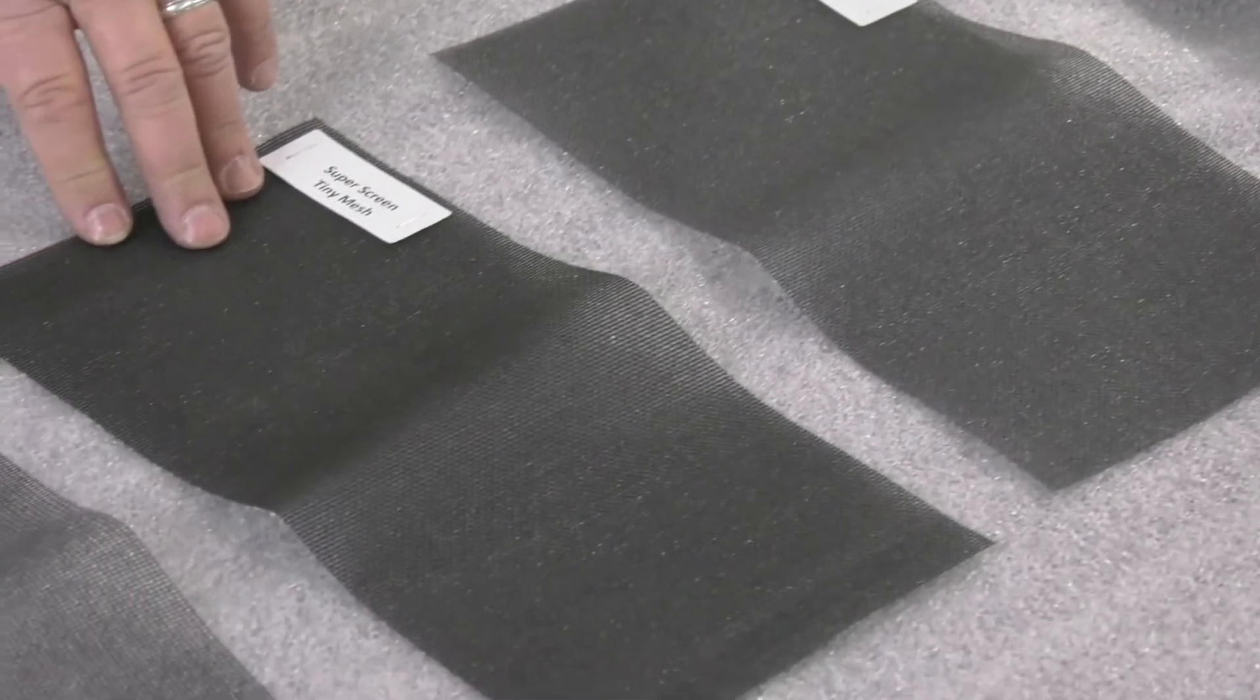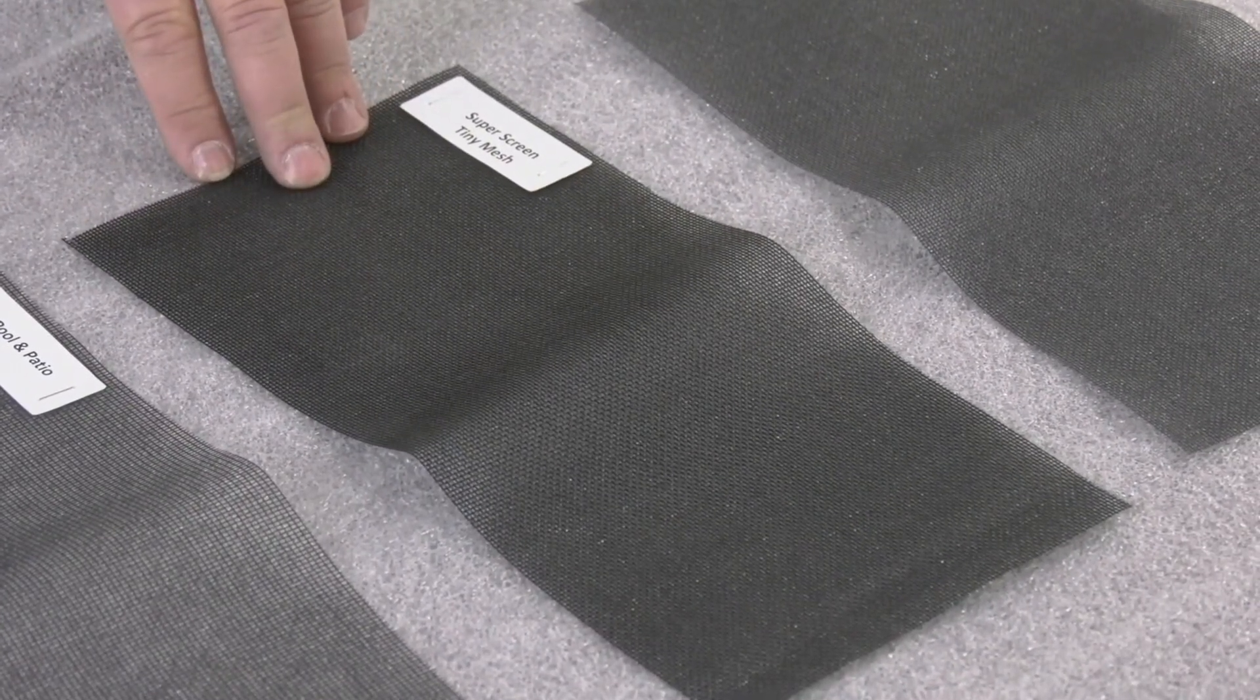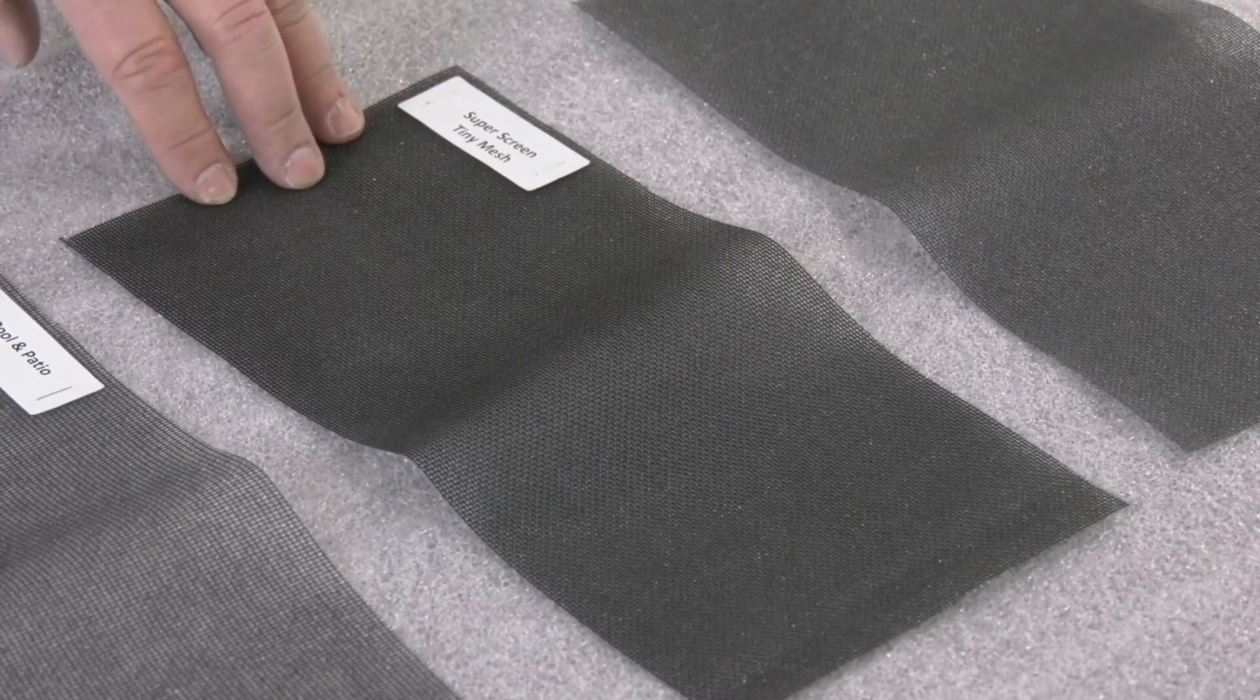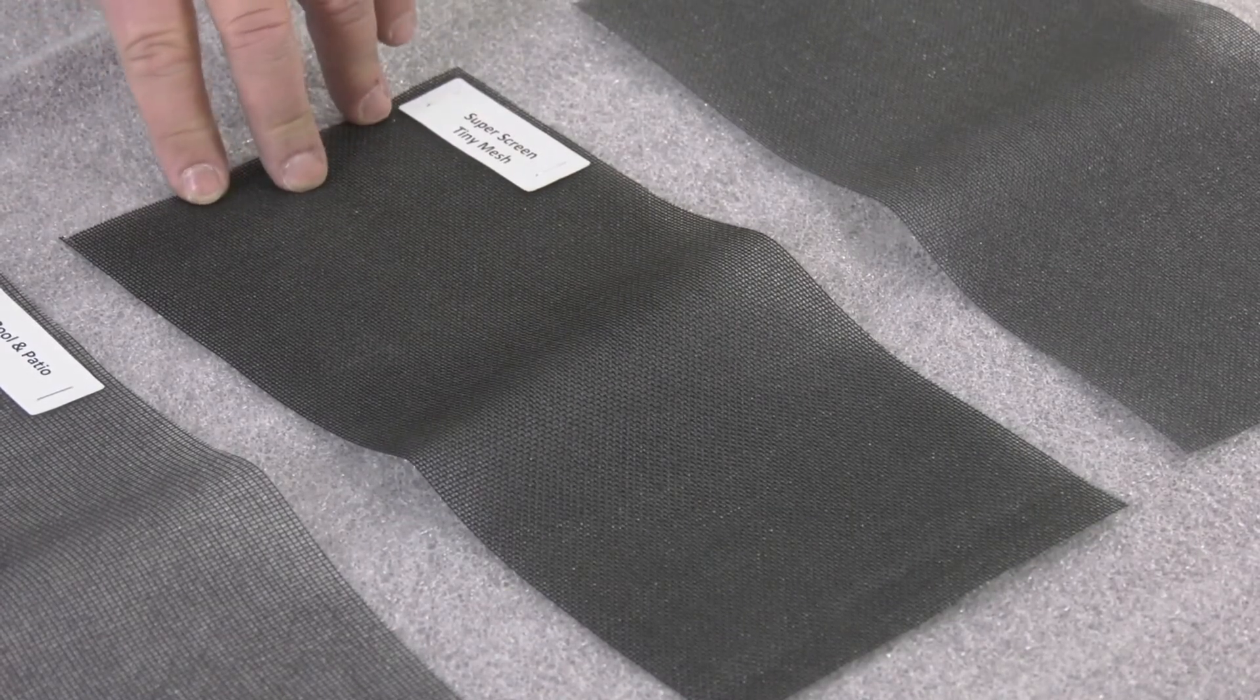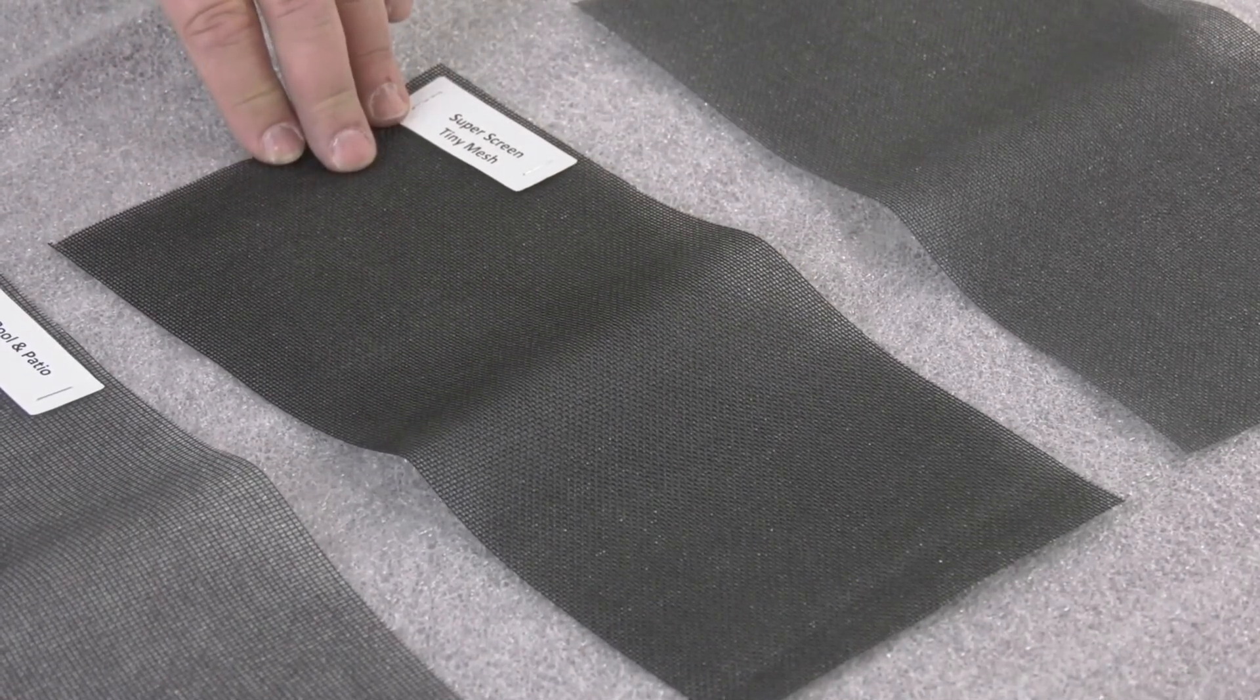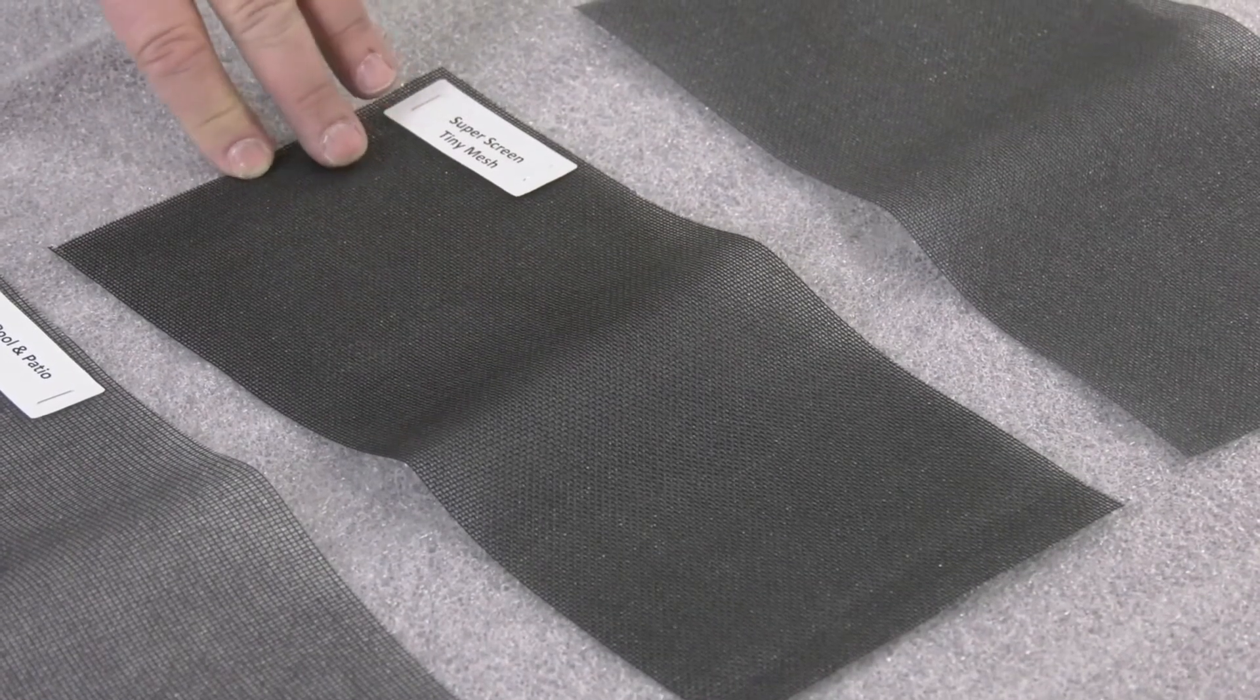Then we'll move to the super screen tiny mesh. This is a heavy duty vinyl coated polyester for larger openings up to 10 feet. It controls for tiny insects as well. It's a 0.14 wire diameter, 17 by 20 mesh. It installs with a 0.310 flat spline, and it's available in 3 foot to 10 foot rolls.